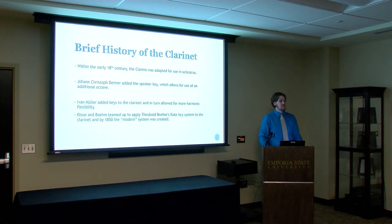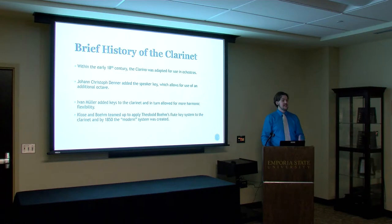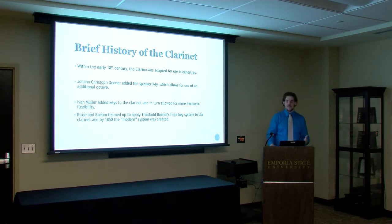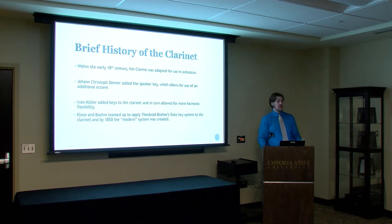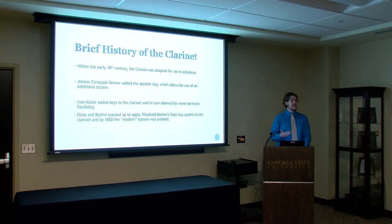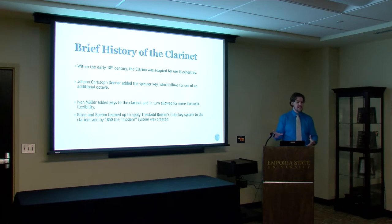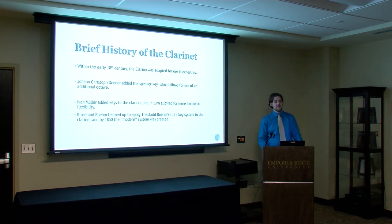At the middle of the 18th century, Johann Christoph Denner made adaptations to the Chalamo, adding the speaker key, which allowed use of an additional octave and extended the range to about two octaves. However, due to the lack of keys on the instrument, only about four keys could be played in, limiting its orchestral use. Ivan Mueller then added keys, dissipating this problem. By around 1820, orchestras were finally accessing the instrument. Klosé and Boehm then teamed up — Klosé was a famous clarinet prodigy who applied Boehm's flute key system to the clarinet, and by 1850 the modern system was created.